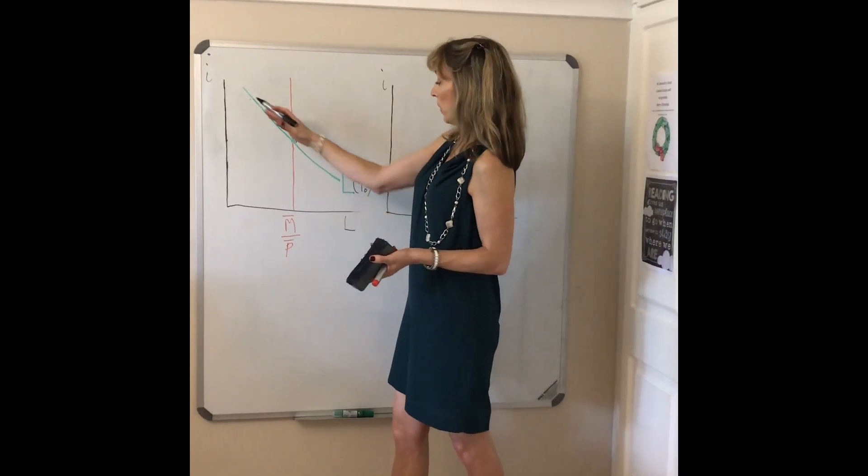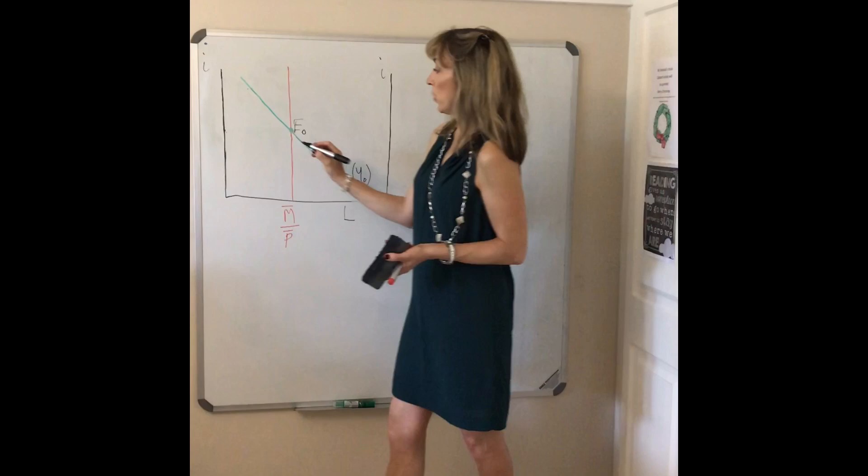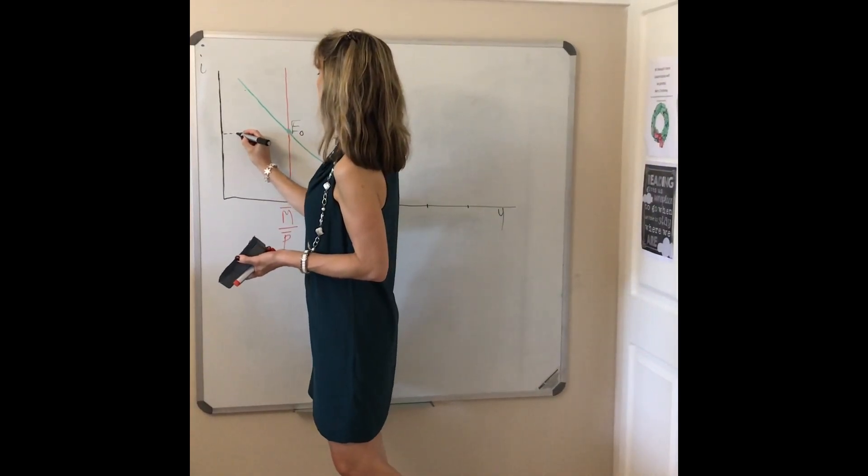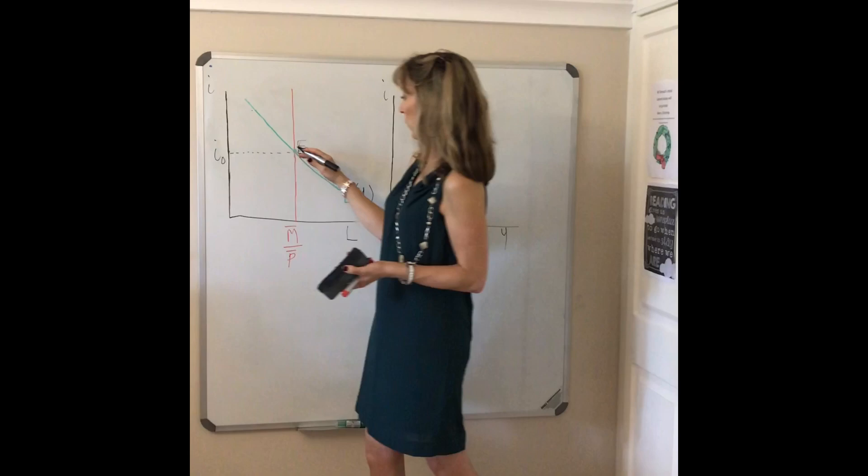Equilibrium is where your money demand intersects your fixed money supply and we get the equilibrium interest rate determined in the process. We call that I0 to start off with.